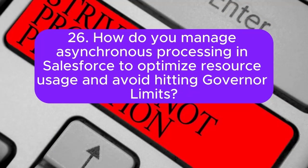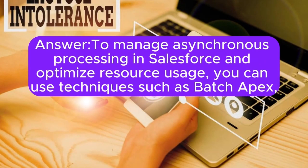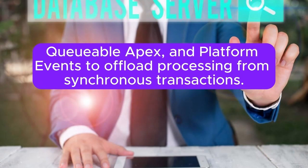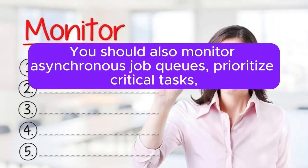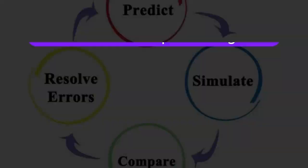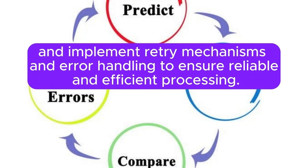Question 26: How do you manage asynchronous processing in Salesforce to optimize resource usage and avoid hitting governor limits? Answer: To manage asynchronous processing, you can use techniques such as Batch Apex, Queueable Apex, and platform events to offload processing from synchronous transactions. You should also monitor asynchronous job queues, prioritize critical tasks, and implement retry mechanisms and error handling to ensure reliable and efficient processing.